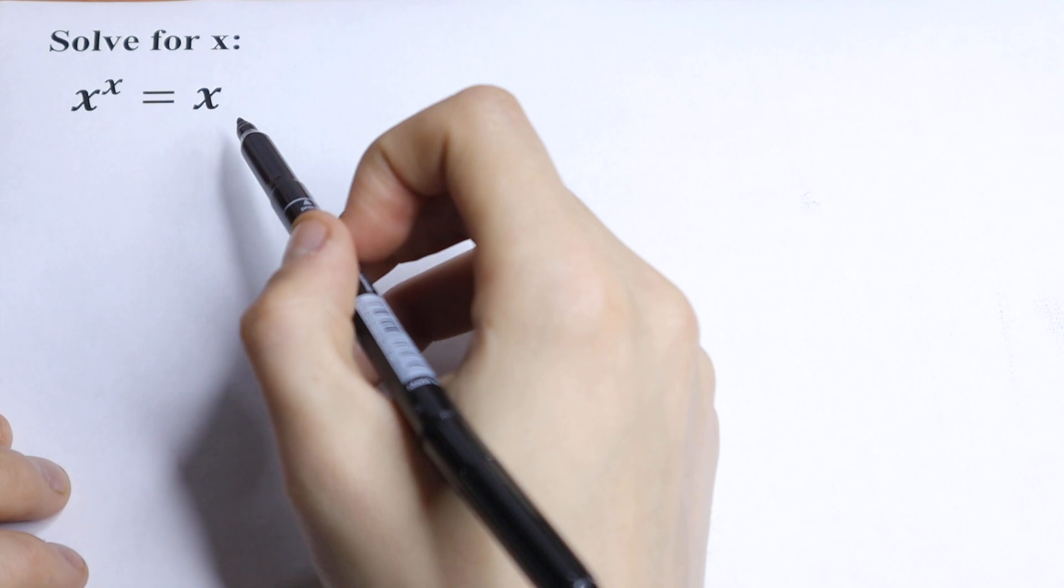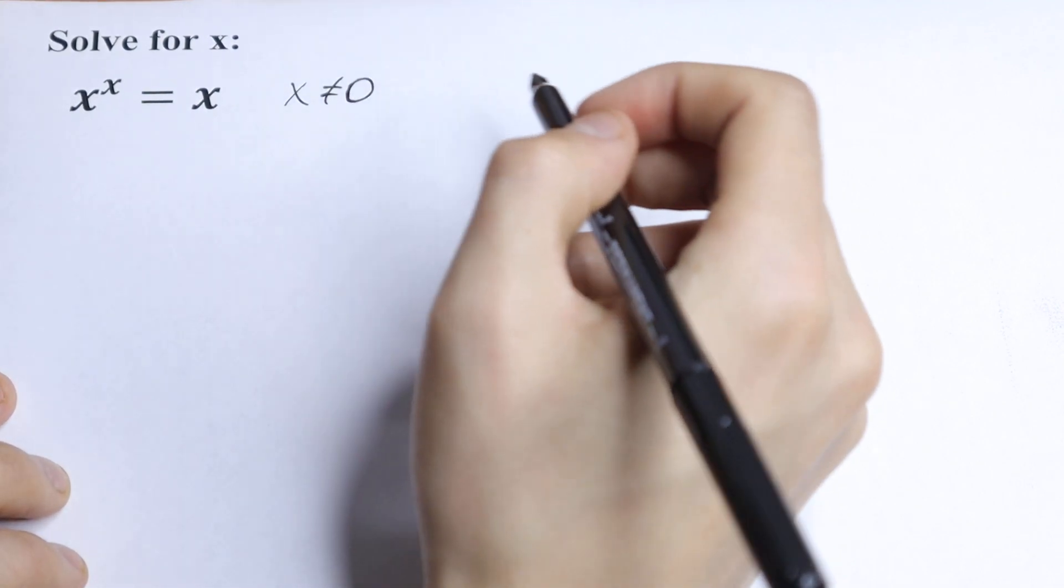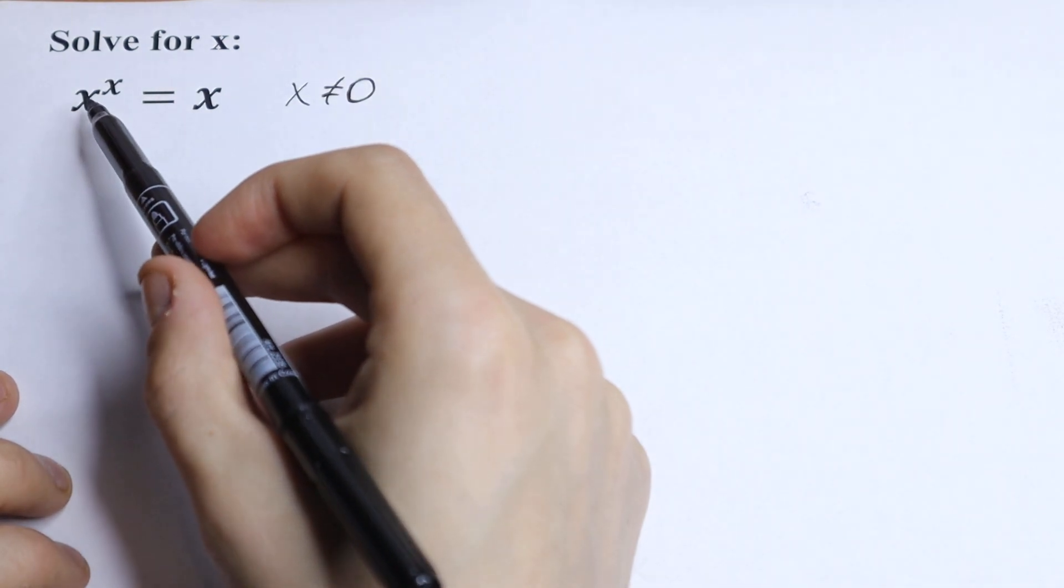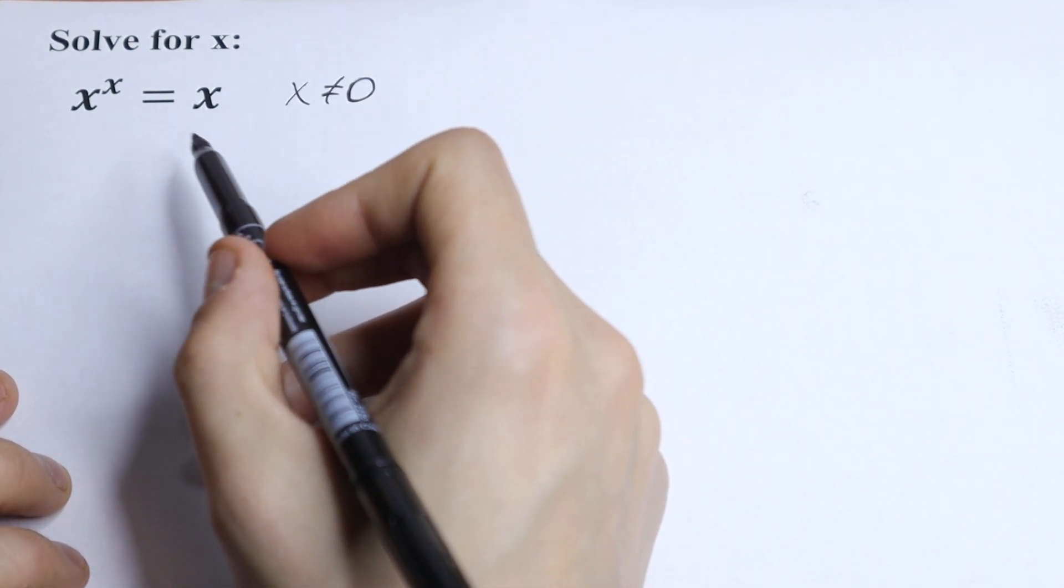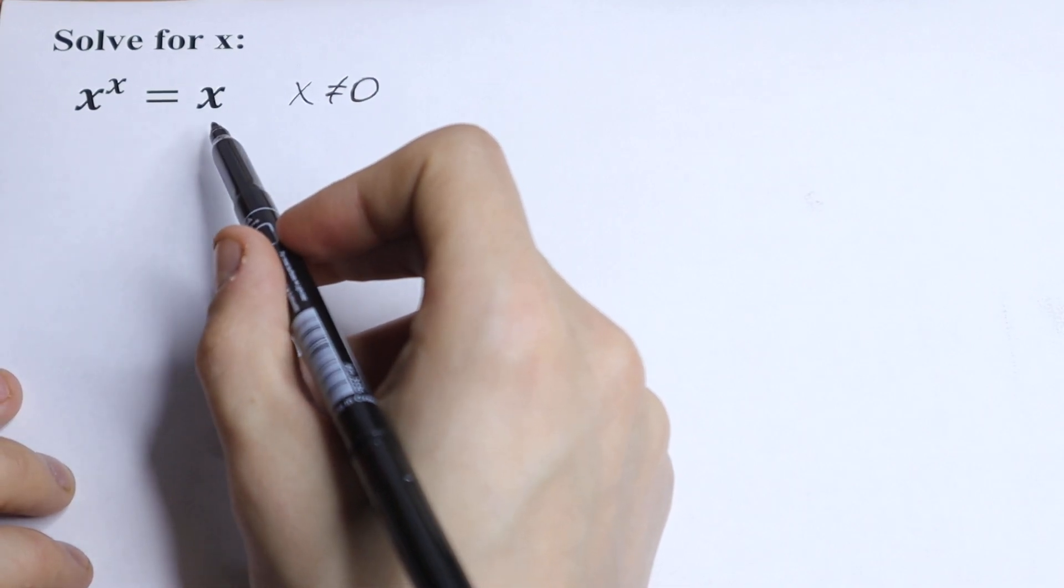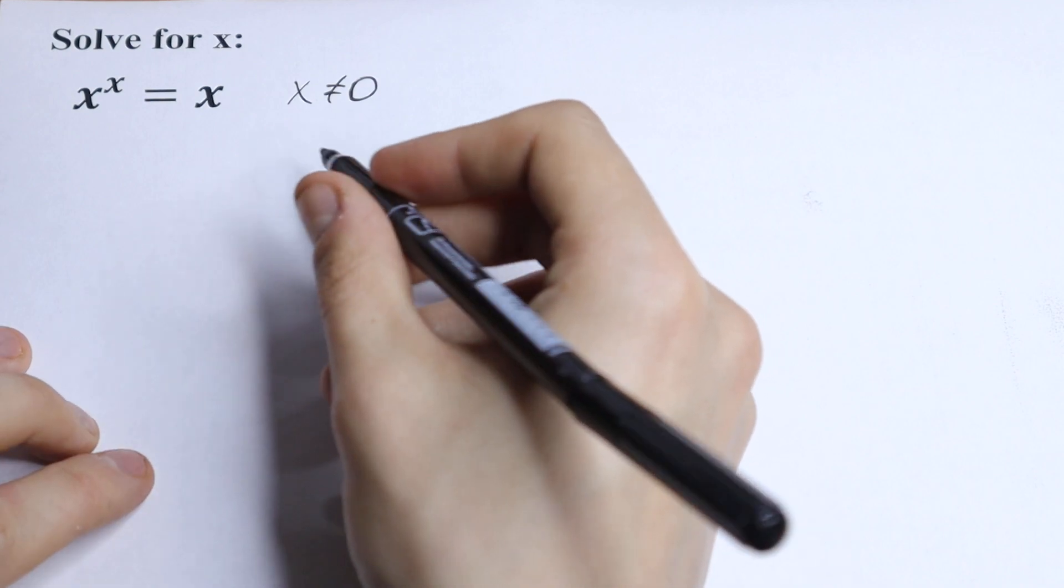First of all, we can divide both sides by x because we know that x is not equal to zero. Because if we put zero right here, we will have zero to the zero power equal to zero, which is not correct. On the left we will have one, on the right we will have zero. So we can divide both sides by x.